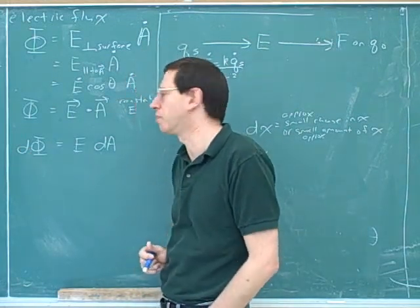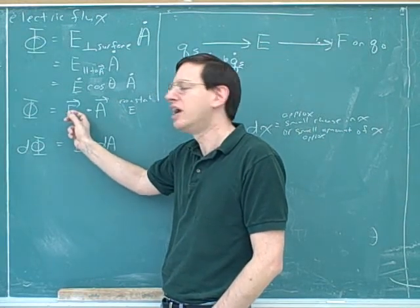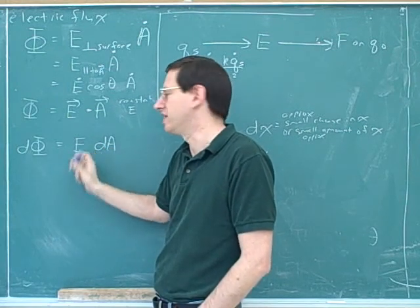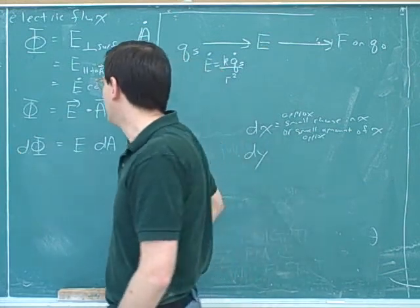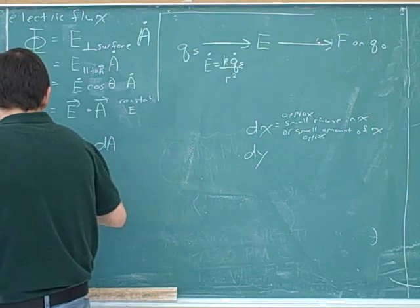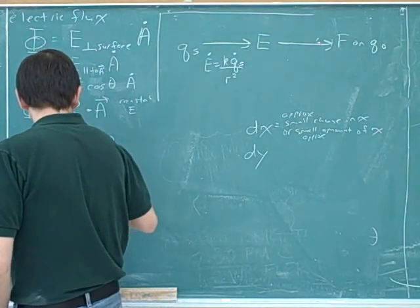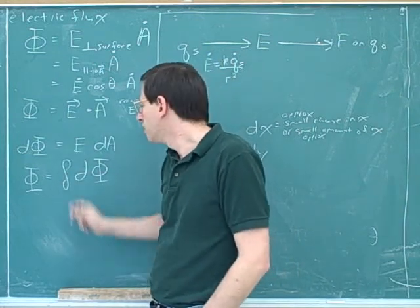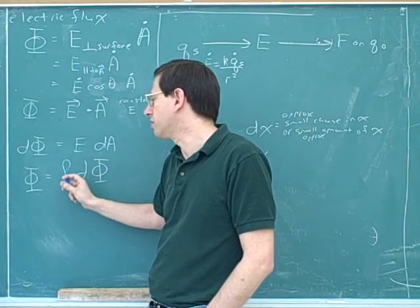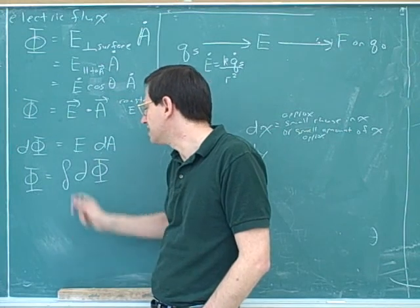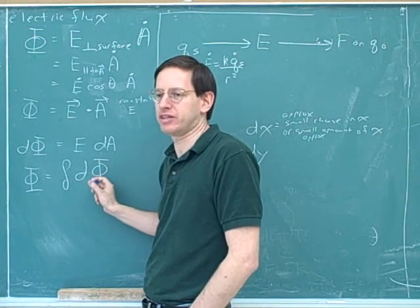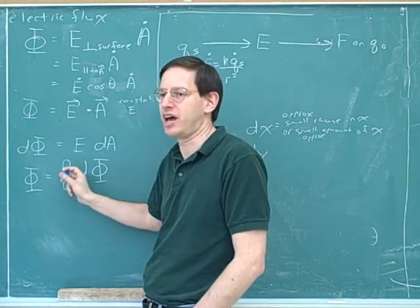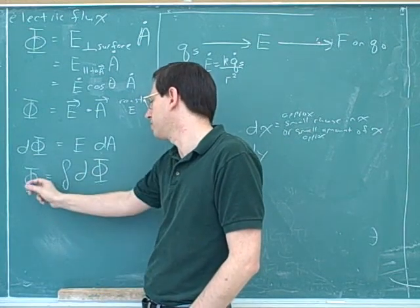This is a trick we'll use many times throughout the course. You take a formula that depends on one variable being constant; if it isn't constant, you focus on a small amount of the other variable where it's approximately constant, and that gives you the approximate small amount of the dependent variable. To find the total flux, we integrate all these small amounts of flux. The integral symbol tells you to add up — it's an elongated S standing for sum. To figure out total flux, you add up all the little pieces.